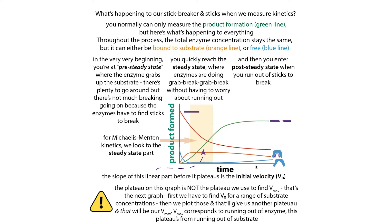Once you reach the post-steady state, your free enzyme concentration starts to go up and your bound enzyme goes down, and you're not making product at the same rate. This is the cumulative product formed — you reach this plateau. You want to take the slope of this linear part before it plateaus, and this is going to be your initial velocity, the V-naught.